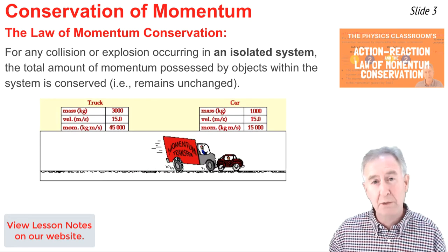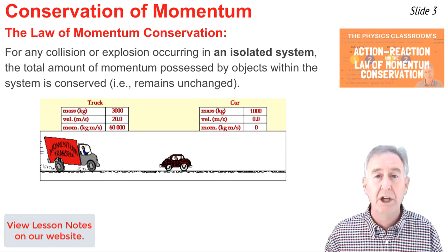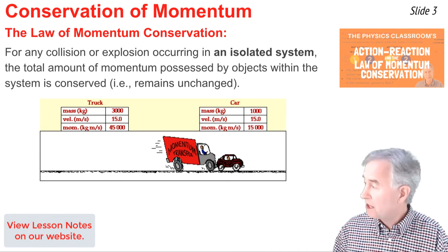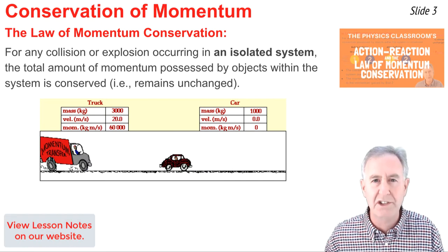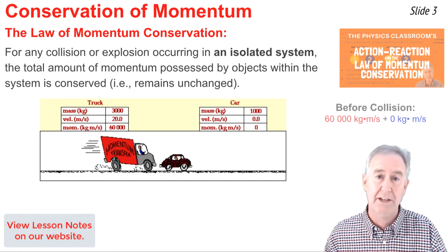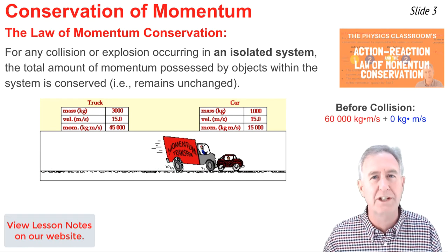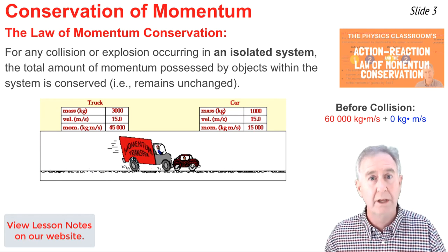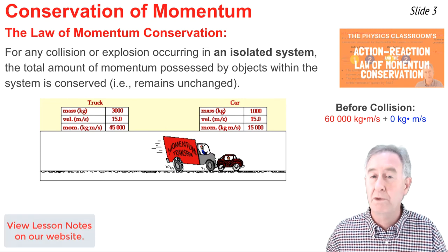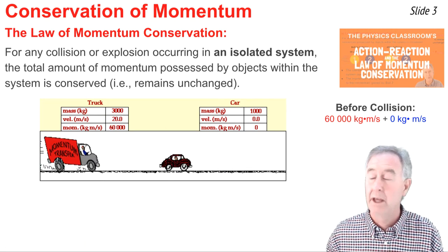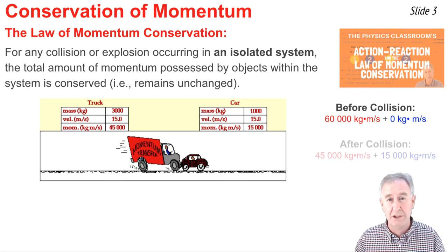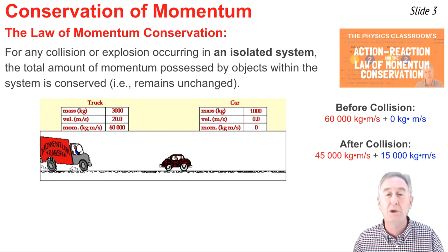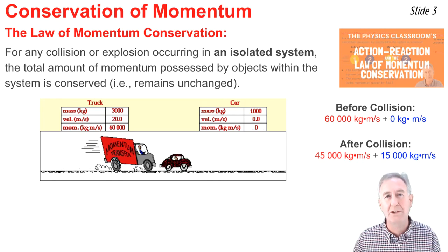If we look at this animation of a truck colliding with a car, we observe that before the collision, the truck has 60,000 units of momentum and the car has zero, so the system has a total momentum of 60,000 units. After the collision, the truck has lost momentum — it has 45,000 units — and the car has 15,000 units, which combines to 60,000 units.